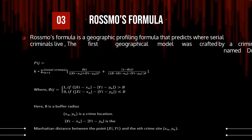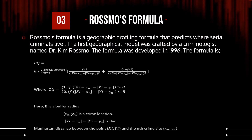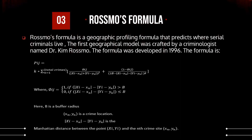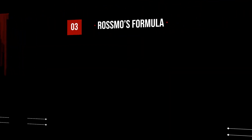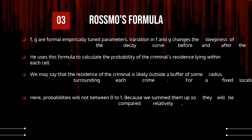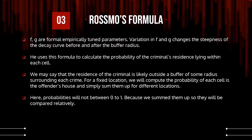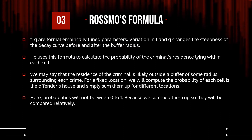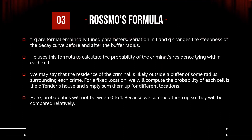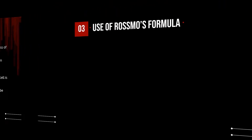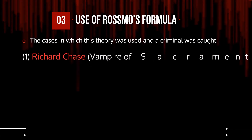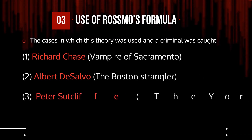Rossmo's formula allows us to calculate the maximum probability of a criminal's residence. It uses the concept of Manhattan distance. The residence of the criminal is likely outside the buffer zone of some radius surrounding each crime. For a fixed location, we compute the probability that each cell is the offender's house and sum them up. Probabilities are compared relatively since they are summed and not bounded between 0 and 1.